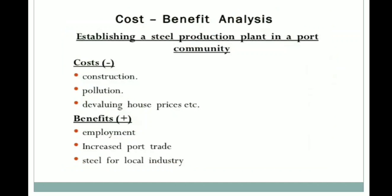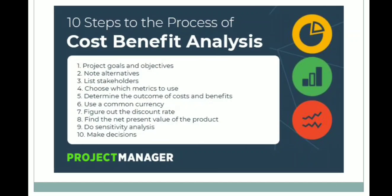As an example, consider establishing a steel production plant in a port community. The costs include: construction amount spent, actions taken to prevent pollution, and devaluing of house prices. The benefits include: employment opportunities, increased port trade, and steel for local industry — which minimizes transportation costs since it is localized. So at a glance, we can categorize costs and benefits for this scenario.